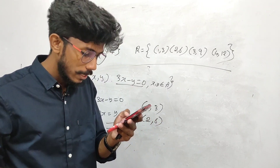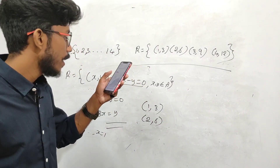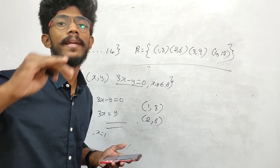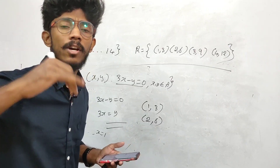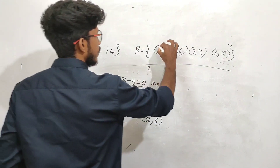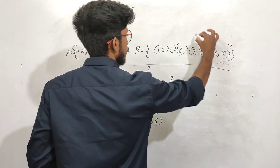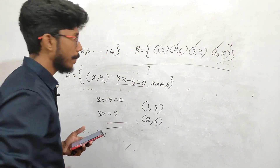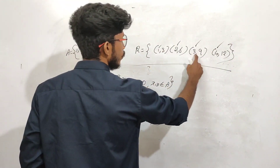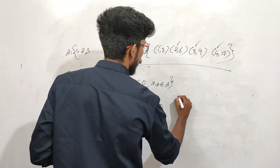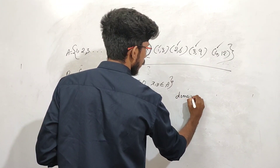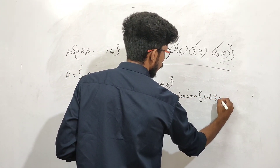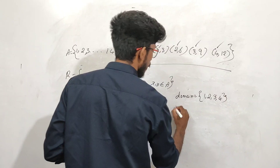Next question: write the relation, domain, co-domain, and range. What is domain? Domain has x values — the x values in the relation. So the values are one, two, three, four. Domain is one, two, three, four.